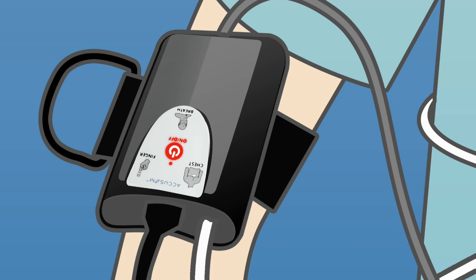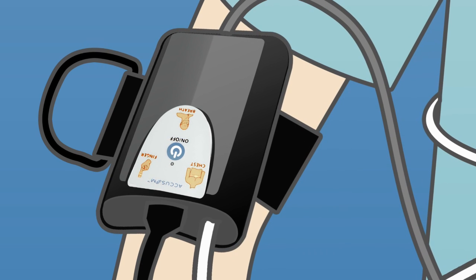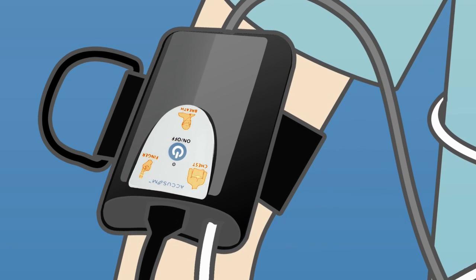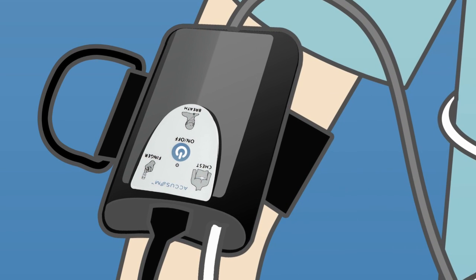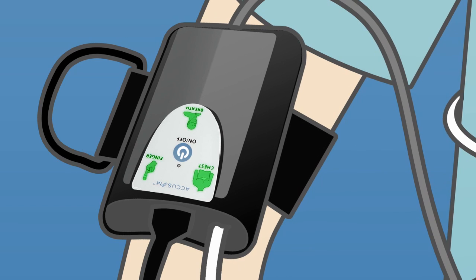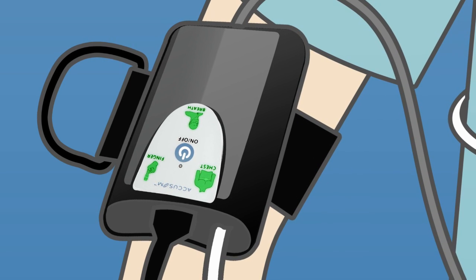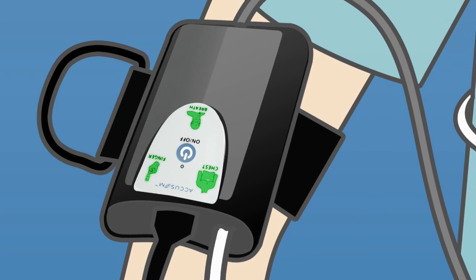The device will prompt you to check the sensors and the lights will flash orange as the device goes through its systems checks. Once all connections are verified to be working, the lights will turn green. The device will then announce, system is now recording.